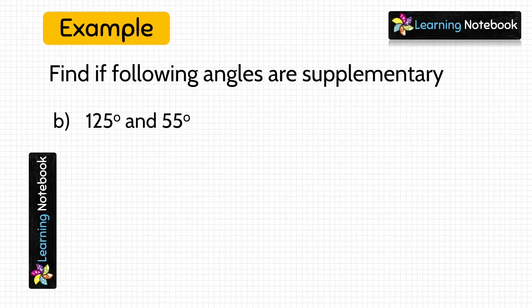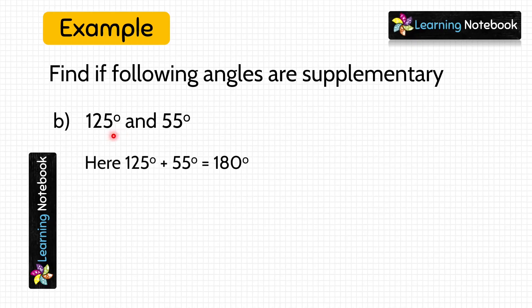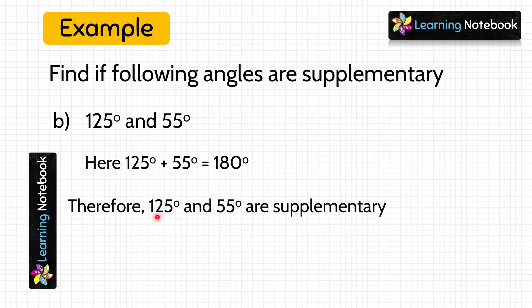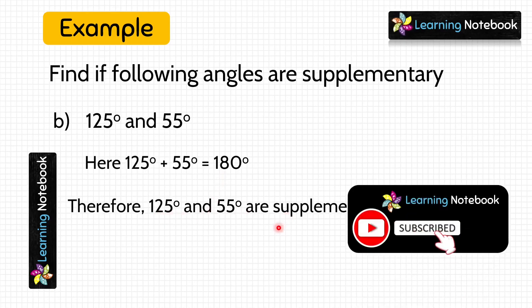Now let's move to the next part of this question. Here, we are given the measures of two angles as 125 degrees and 55 degrees. Again, we have to check if these are supplementary angles or not. Let's add both of them. 125 degrees plus 55 degrees equals 180 degrees. Since the sum of the measures of these two angles equals 180 degrees, both these angles are supplementary angles.